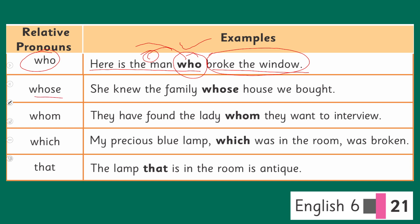The next relative pronoun is 'whose.' Example: 'She knew the family whose house we bought.' The phrase 'house we bought' is referring back to the subject, the noun, which is connected with the word 'whose.' So 'whose' is the relative pronoun connecting these two parts together.